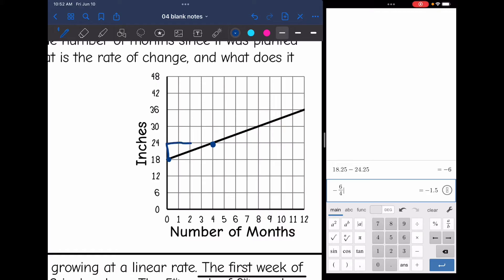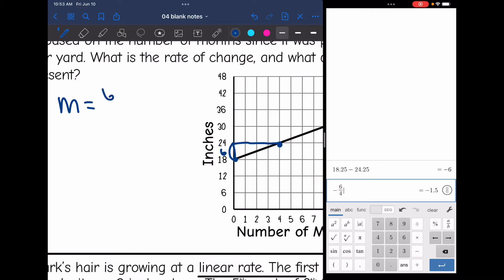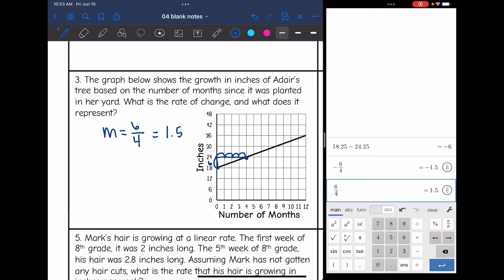And let's draw a slope triangle. My y-axis is counting by sixes. So I'm only going up one space, but that change from 24 to 18 is six. So the rise is six. And then the run is one, two, three, four. And I'm going to go ahead and change this to a decimal since we're talking about inches. So six over four is 1.5. So it said, what is the rate of change and what does it mean? So 1.5 means that her tree is growing 1.5 inches per month. So Adair's tree is growing 1.5 inches per month.